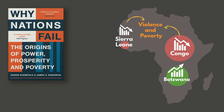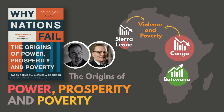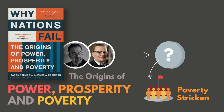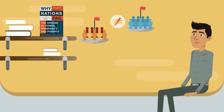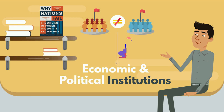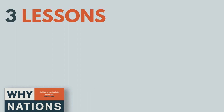Why Nations Fail: The Origins of Power, Prosperity, and Poverty by Daron Acemoglu and James A. Robinson centers around the question of why some nations remain poverty-stricken while others live in abundance. In this eye-opening book, the authors explain that the difference is actually the result of economic and political institutions put in place during critical junctures in history. Here are just three of the many eye-opening lessons from this book.